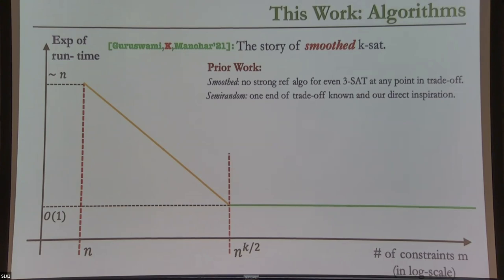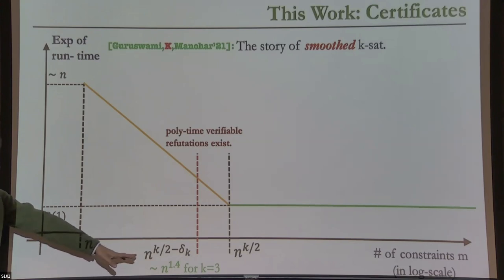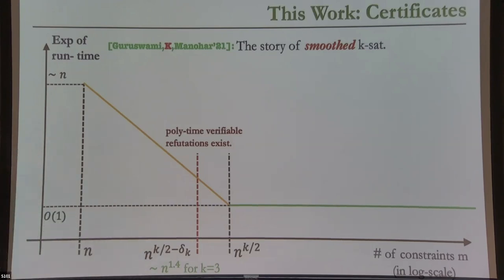Question from the audience: is there also this type of behavior — having small refutations — in the smooth case? Yes, that's the next point. The second punchline is that the exact same polynomial-size refutations below the spectral threshold phenomenon actually happens even for smooth instances. The threshold is exactly the same for K=3. For K≥4 our proof doesn't give the same threshold as random, but it still gives a constant gain in the exponent below the spectral threshold for every CSP.